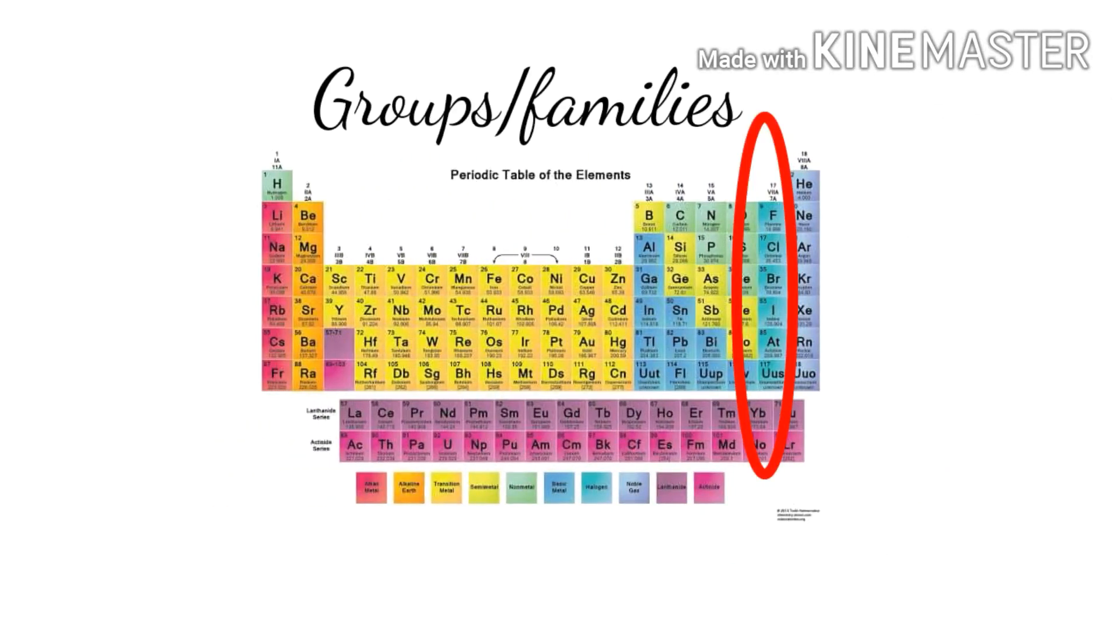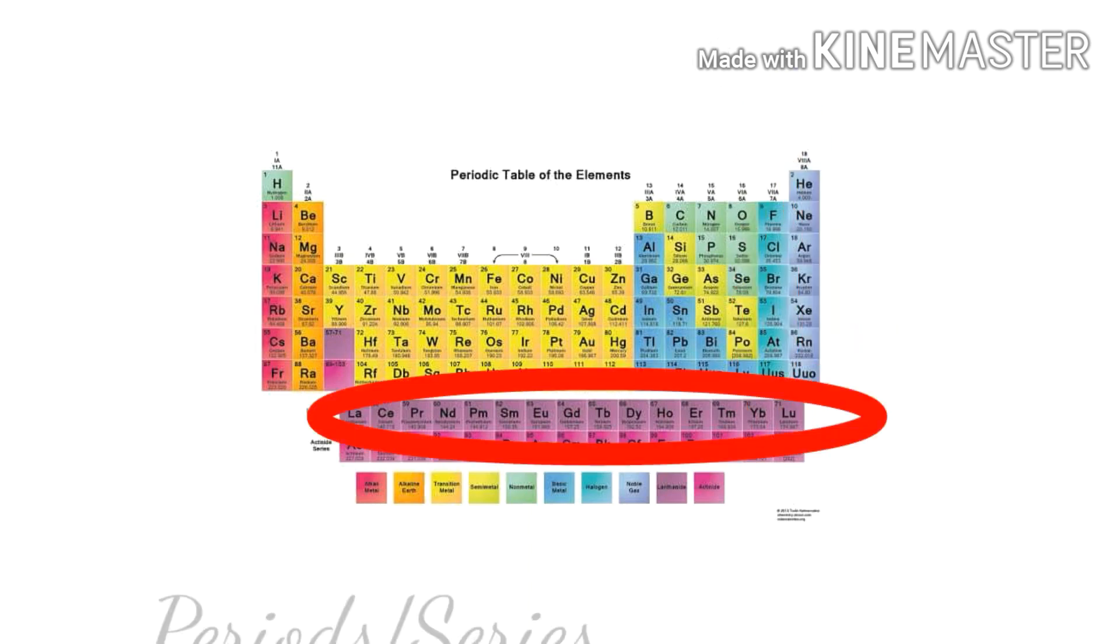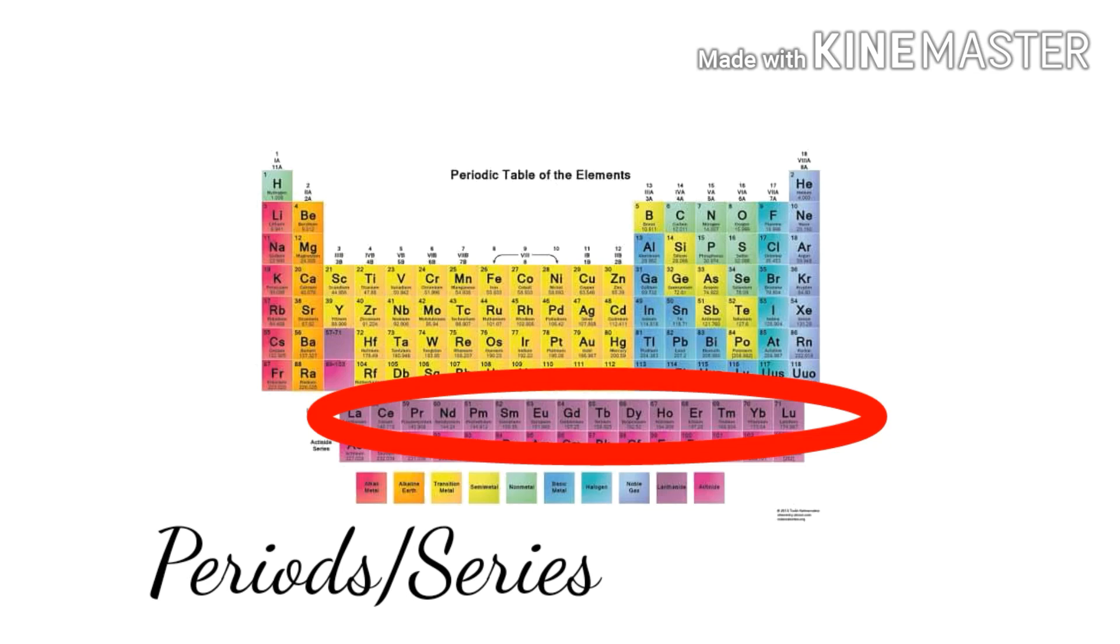Elements that are vertically arranged are called groups or families, while elements arranged horizontally are called periods or series.